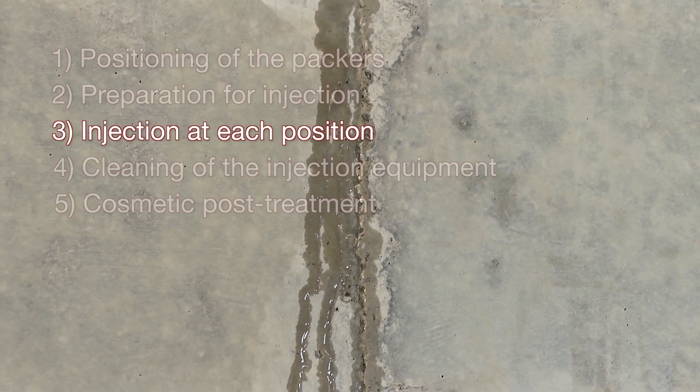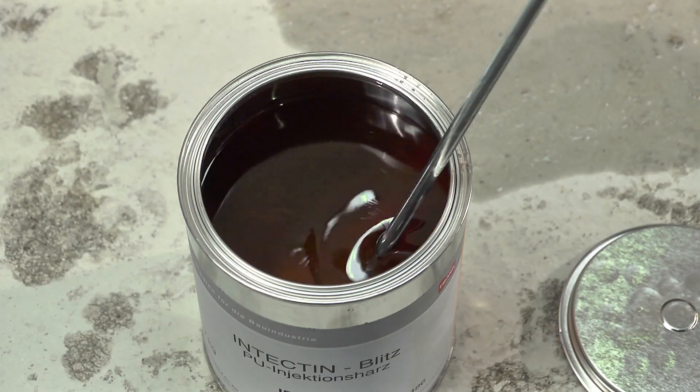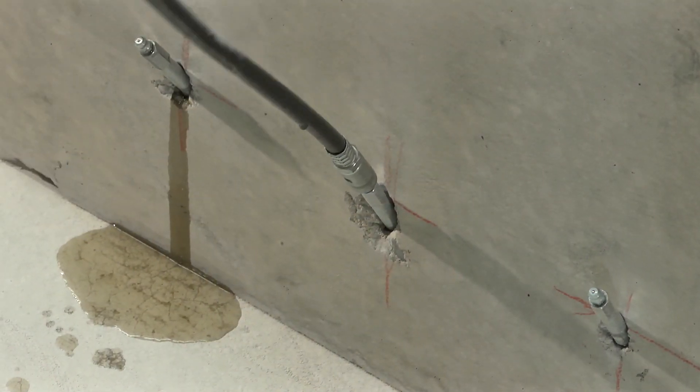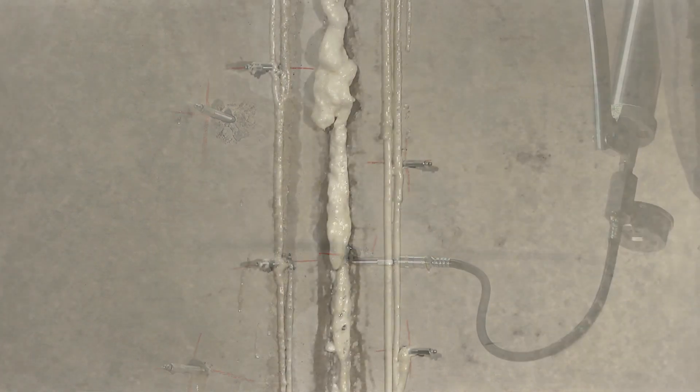For phase 3, pre-grouting is only required for actively leaking cracks or joints. After thorough mixing, Intectin Blitz is injected several times, horizontally in a row or vertically from the bottom to the top, until the flow of water is stopped.